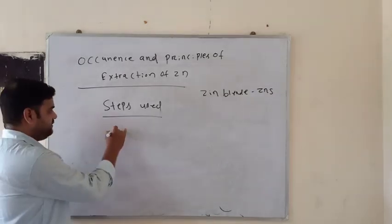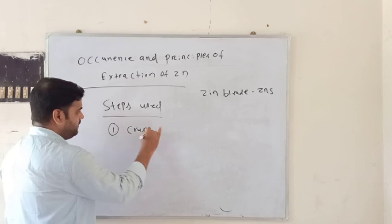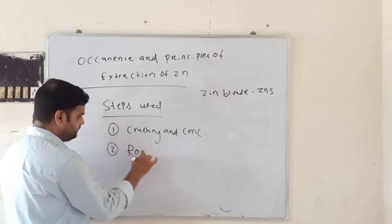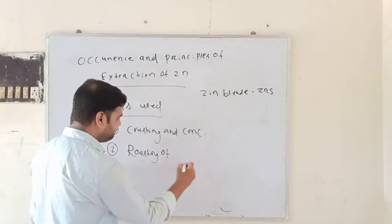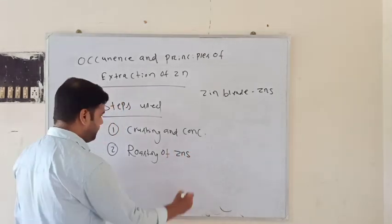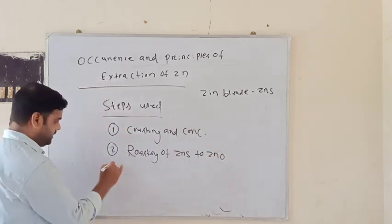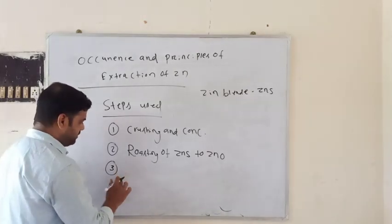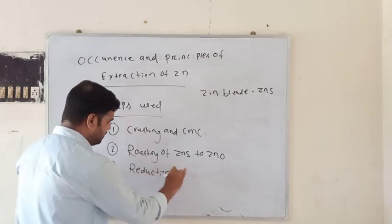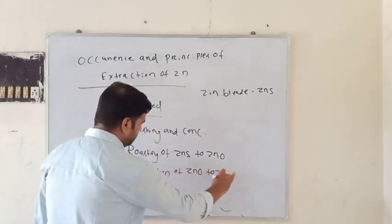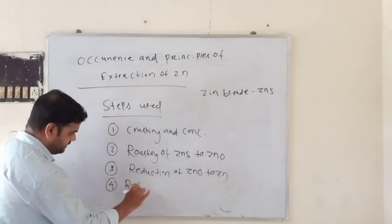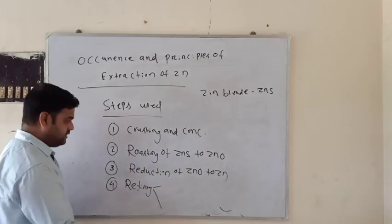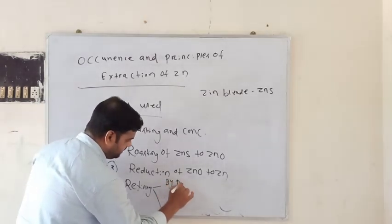The steps used for the extraction of zinc are: the first step is crushing and concentration, the second step is roasting — roasting of ZnS to ZnO, the third step is reduction — reduction of ZnO to Zn, and the last step is refining. The refining process has two sub-processes: fractional distillation and electrolytic refining.